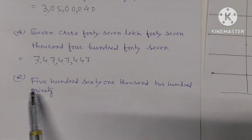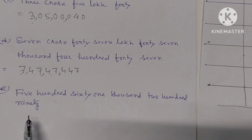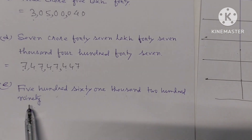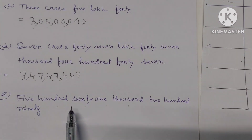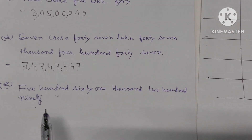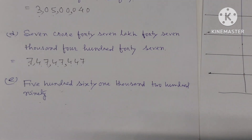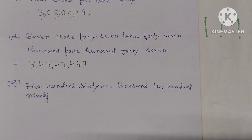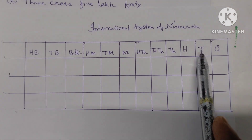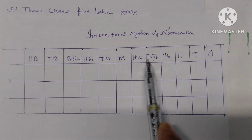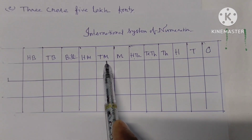Part (e): five hundred sixty-one thousand two hundred ninety. This number is given in the International system of numeration. The place value chart for the international system goes: ones, tens, hundreds, thousands, ten thousands, hundred thousands, millions, ten millions, hundred millions, billions.